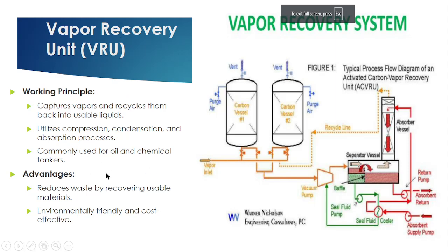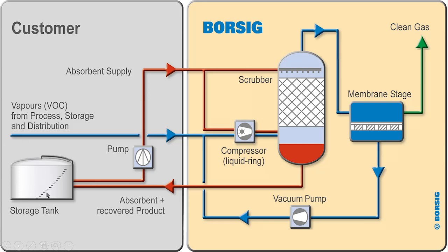The advantage of this system is that it reduces waste by recovering usable material, it is environment friendly, and also cost effective. Looking at the diagram, the process involves air compression, absorption, and condensation. The volatile organic vapor coming from storage is compressed, cooled, and cleaned. The usable liquid is collected and pumped back to the storage. In the membrane stage, adsorption technology is used and the remaining gas is sent back to the compression unit and again back to the storage tank.